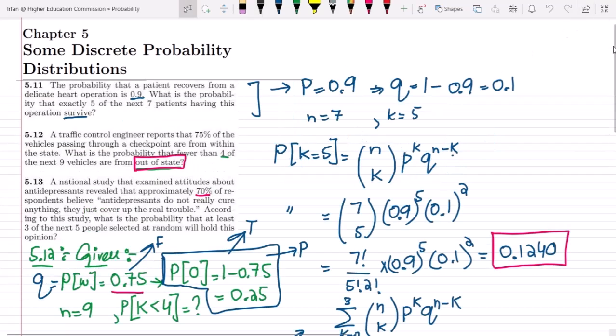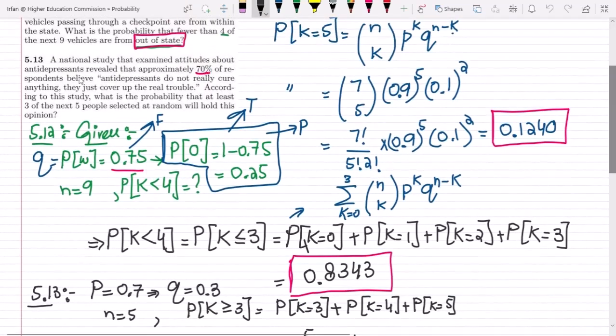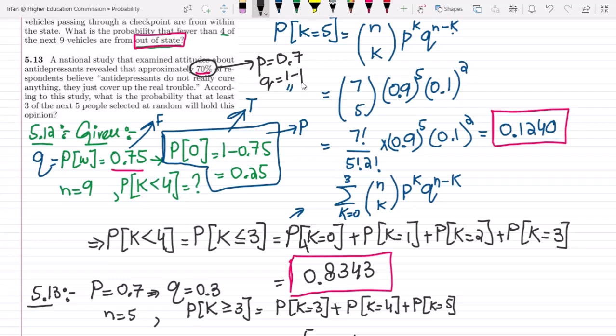So this is question 5.13 and here we can see that a national study that examined attitudes about antidepressants revealed that approximately 70% of respondents believe antidepressants do not really cure anything, they just cover up the real trouble. So here it can be very clearly seen that p is 0.7. So q which is 1 minus p, that is 0.3. So let us get back to our question.